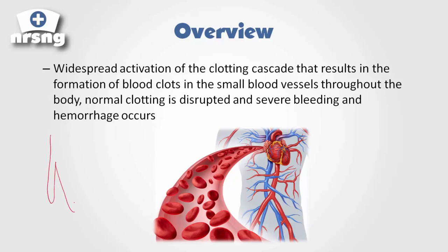For example, this massive clotting cascade occurs in the microvascular system within the body to such an extent that your ability to clot becomes ceased — you no longer can clot. And because of that, massive hemorrhage occurs. This is a huge concern.